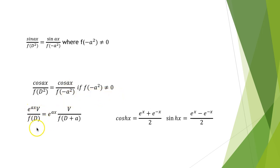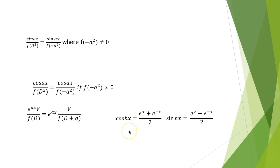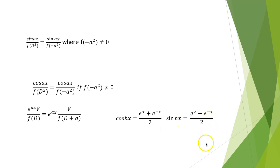And e^(ax)·V / f(D) uses the exponential shift formula. We also need to keep in mind that cosh(x) = (e^x + e^(-x))/2, and sinh(x) = (e^x - e^(-x))/2.